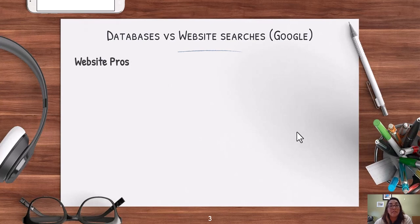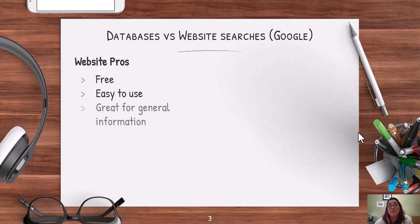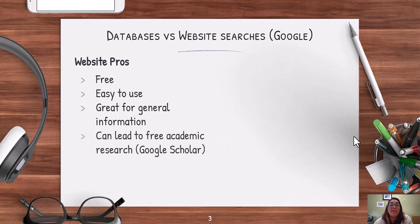What are the benefits of doing a website search or Google search? Google is free — anyone can use it. It's very easy to use and user-friendly. It's really great for general information, for example when was Mozart born or how long has Bob's Burgers been on TV. It can also lead to some free academic research, specifically with Google Scholar. If you're interested in Google Scholar, I recommend you attend the other workshop on Google Apps.